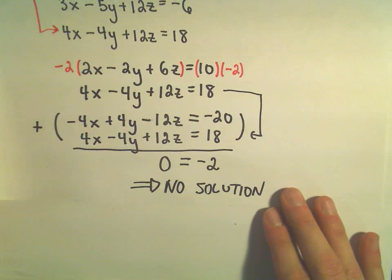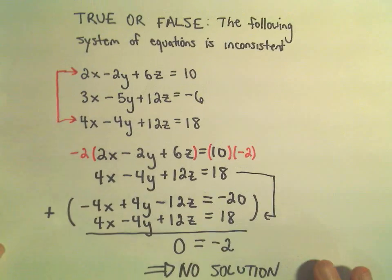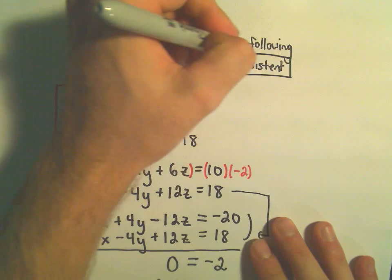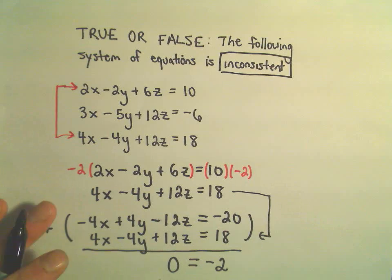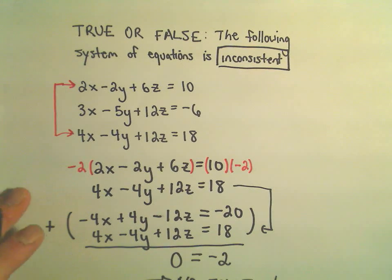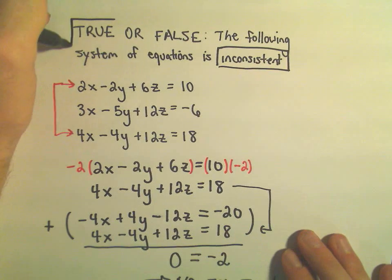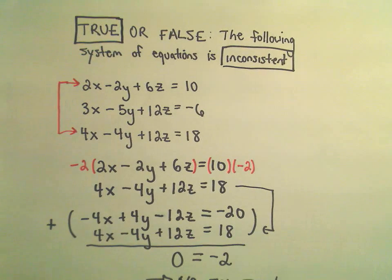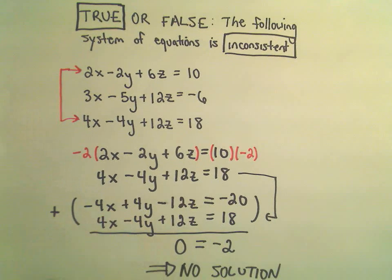And if there's no solution to your system of equations, we do call that an inconsistent system. It doesn't make sense somehow. So I would say, yes, this is true. This following system of equations is inconsistent.